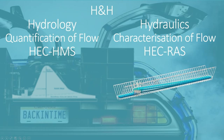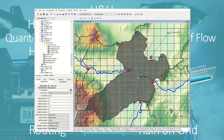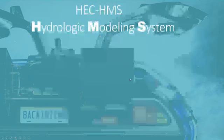HMS and RAS have increasing overlap — we have, for example, rainfall routing. HEC-RAS can also route unsteady flow hydrographs along the channel or a floodplain. If you use direct rainfall or rain-on-grid in HEC-RAS, it will quantify the flow and generate a runoff hydrograph from the rainfall. And the latest version of HMS also has 2D hydraulics built right in. So given this increasing overlap, when faced with a choice between the two, which model should we use?